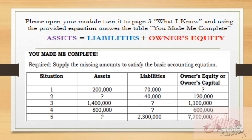Please open your module and turn it to page 3, 'What I Know.' Using the provided equation — assets equals liabilities plus owner's equity — answer the table. It says: supply the missing amounts to satisfy the basic accounting equation. We have five situations.